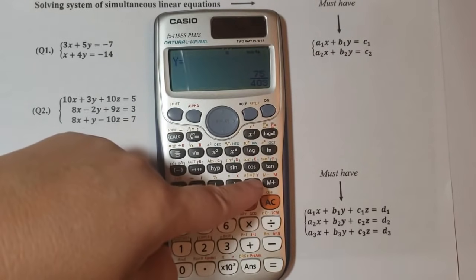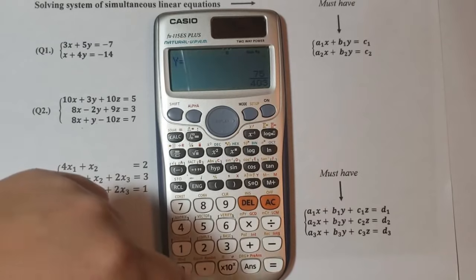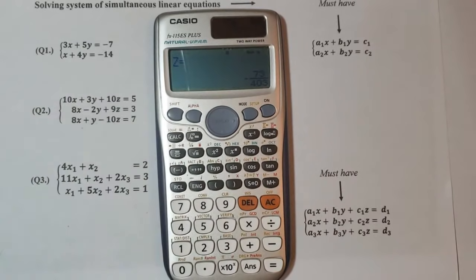Again if you need a decimal just press this key here. Equal, z, minus 73 over 403.